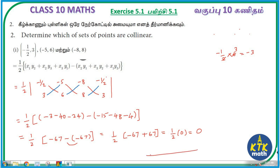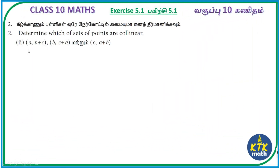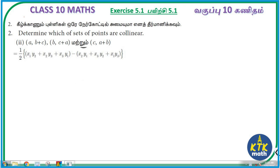Now the second subdivision - we will check the second set of points. The points are given in terms of variables: (a, b+c), (b, c+a) and (c, a+b). If we use these three points in the area of triangle formula and the value comes out to 0, they will be collinear. So we apply: area of triangle = half of the determinant with points (a, b+c), (b, c+a), (c, a+b), and repeat the first point.